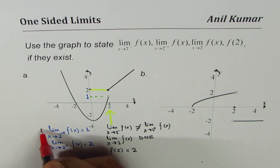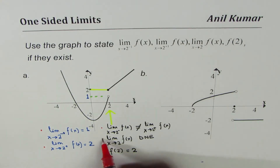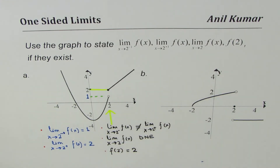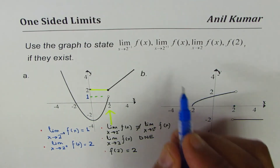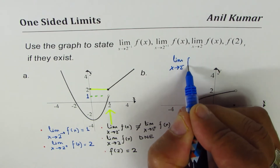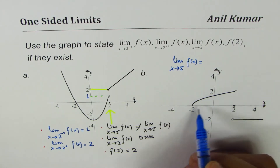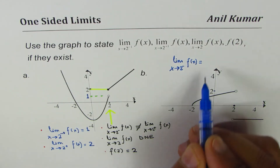You can now pause the video and answer the one-sided limits, the limit of the function, and the value of the function for the second graph. For the second graph, if you approach from the left side, the limit as x approaches 2 from the left for f of x: we are on the square root function approaching 2 from the left side, and we reach a value of 2.